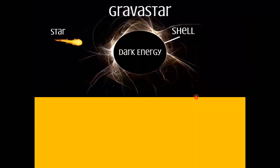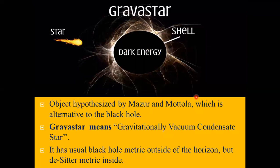Gravastar: an object hypothesized by Mazur and Mottola which is an alternative to the black hole. Gravastar means gravitationally vacuum condensate star. It has the usual black hole metric outside the horizon but de Sitter metric inside.